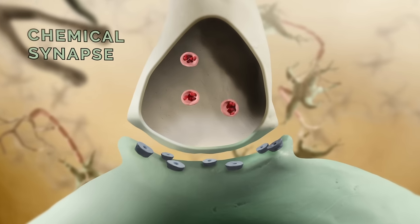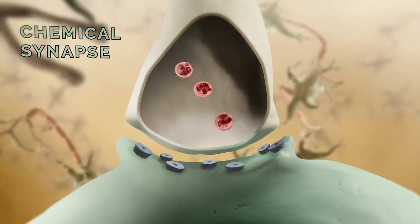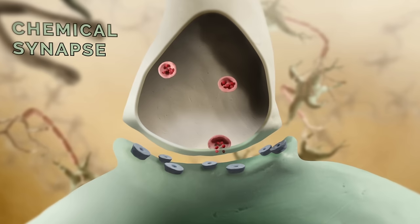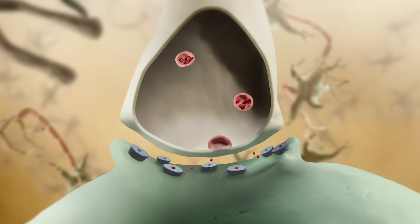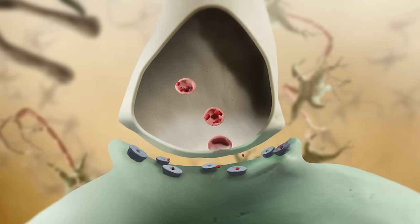This chemical step is slower than transmission across an electrical synapse, but it opens up an enormously diverse repertoire of different and more complex kinds of signaling. And synaptic function plays a critical role in computations performed by neurons.